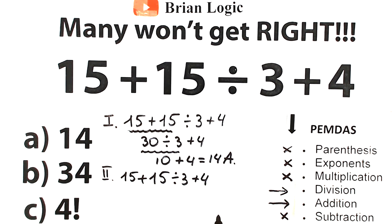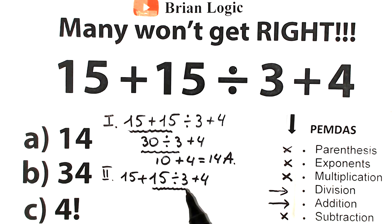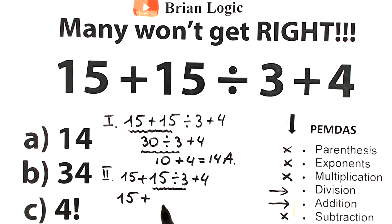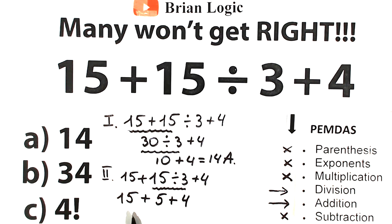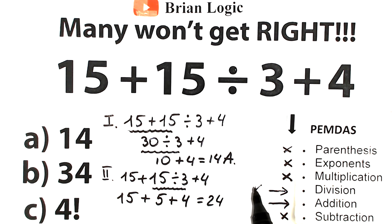So we should start with division first. We apply this division only to these two values: 15 divided by 3 equals 5. Then we have 15 plus 5 plus 4, which gives us 24. So as you can see, we complete the division part first, then complete the addition part, which is the really important moment here.